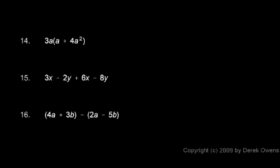In number 14, we have to distribute. We have 3a times a plus 4a squared. So we distribute the 3a across these two terms. We'll have 3a multiplied by the a, and then 3a multiplied by the 4a squared, and those things will be added together.